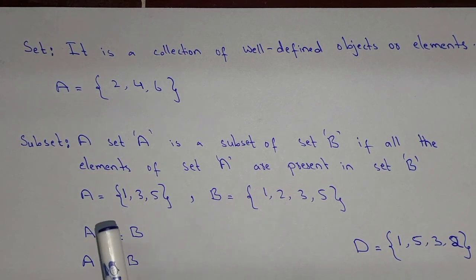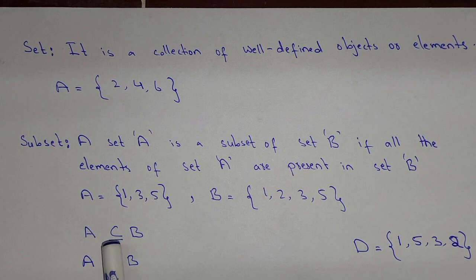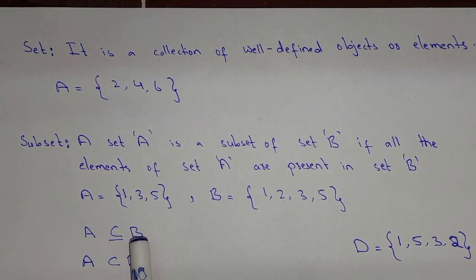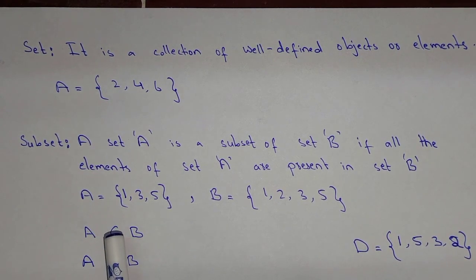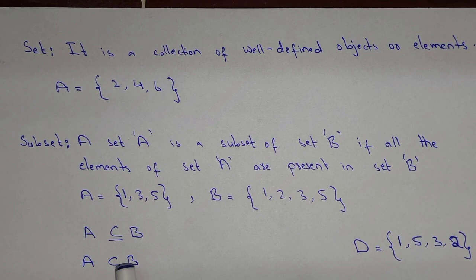This is the sign that is used for the proper subset, and A is the proper subset of set B. And this other sign is used for the subset in general — A is the proper subset or the improper subset. Whereas the specific sign clarifies that A is the proper subset of set B.